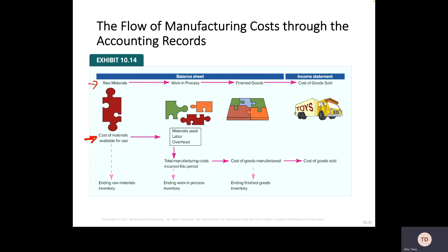Let's just do the example with it. Let's say you purchase $37,950 worth of raw materials. At the end, your raw materials are $950, which means you've used $37,000 in materials. We then move that $37,000 into the work in process category.